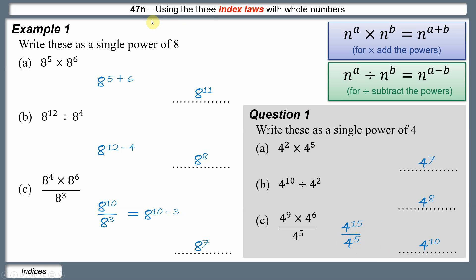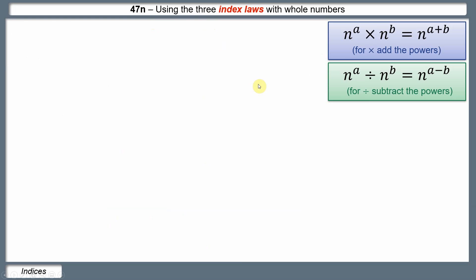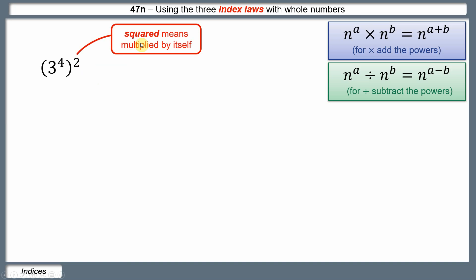We're supposed to have three index laws and so far we've only uncovered two. Suppose we have 3 to the power of 4, and then that result is squared. Squaring means multiplied by itself, so we have 3 to the power of 4 multiplied by 3 to the power of 4. We can use the first index law and add the powers to get 3 to the power of 8.